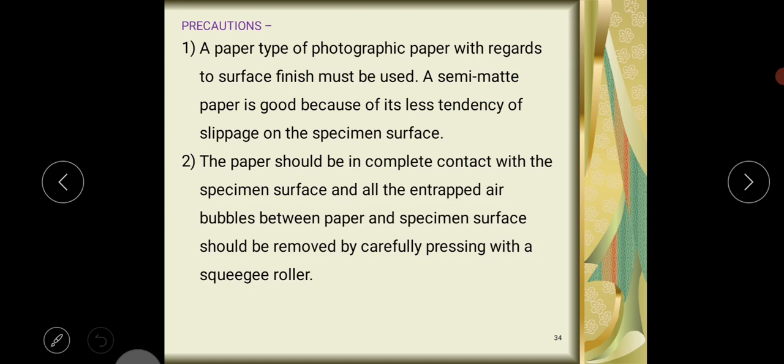Precautions taken during sulfur printing: A paper type of photographic paper with regards to surface finish must be used. A semi-matte paper is good because of its less tendency of slippage on the specimen surface. The paper should be in complete contact with the specimen surface, and all the entrapped air bubbles between the paper and specimen surface should be removed by carefully pressing with a squeegee roller.